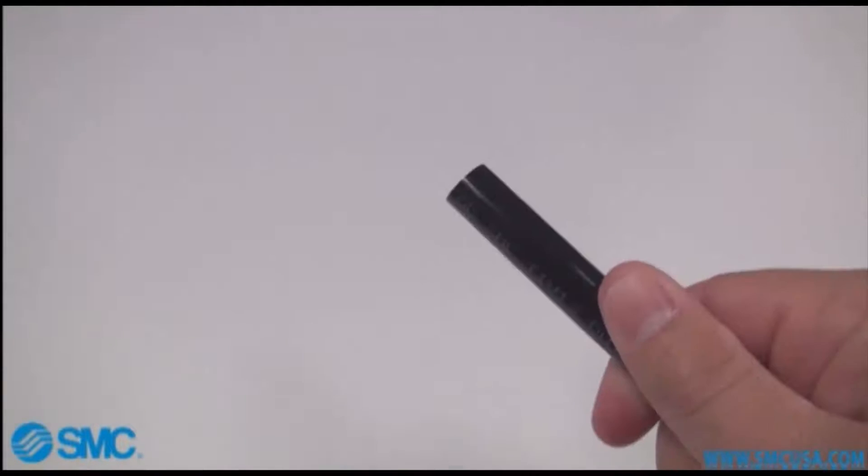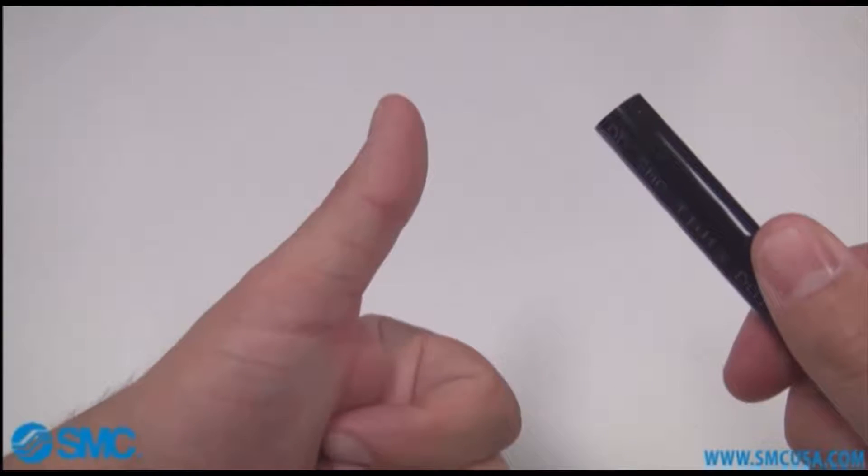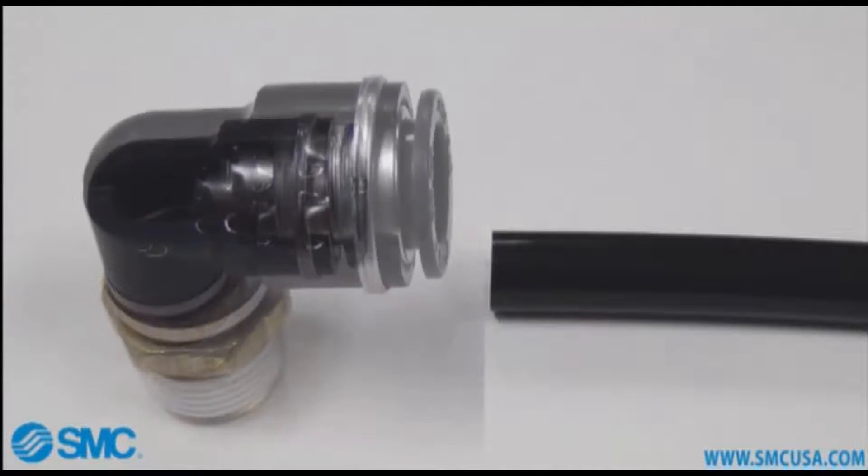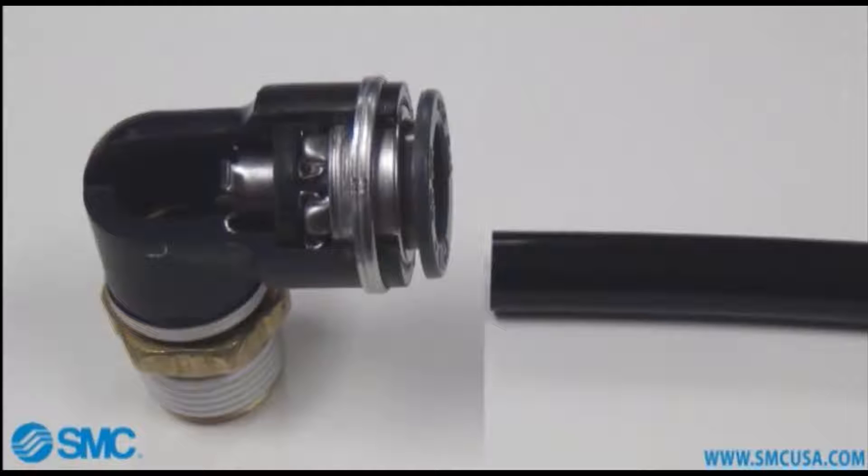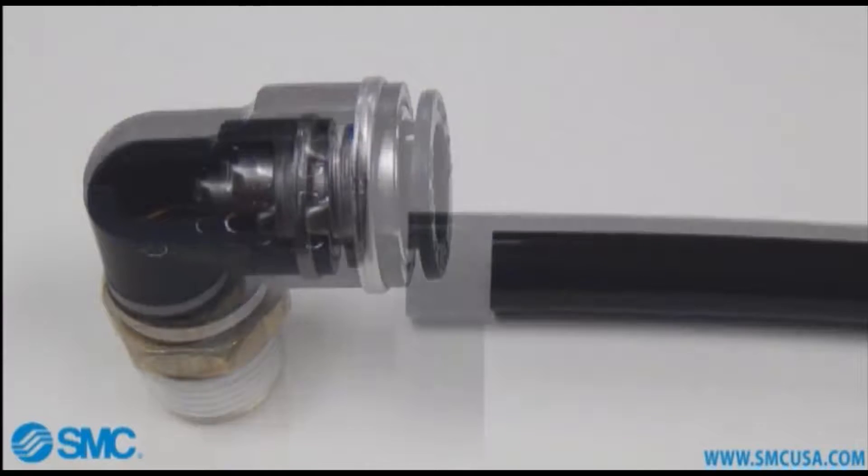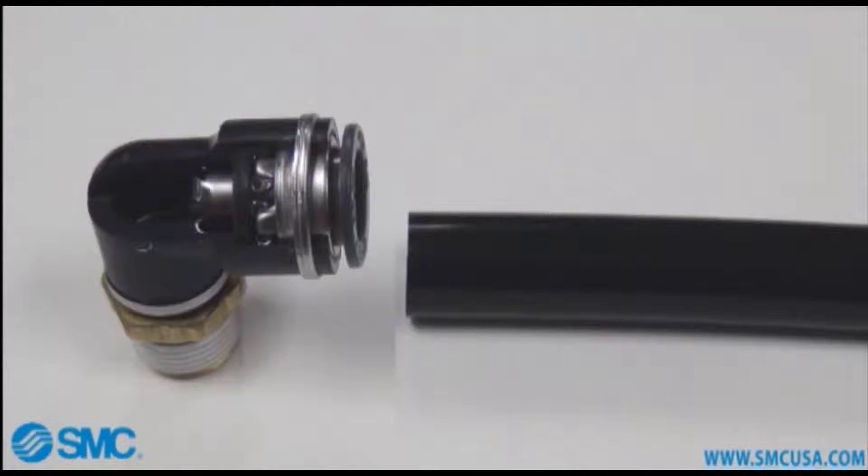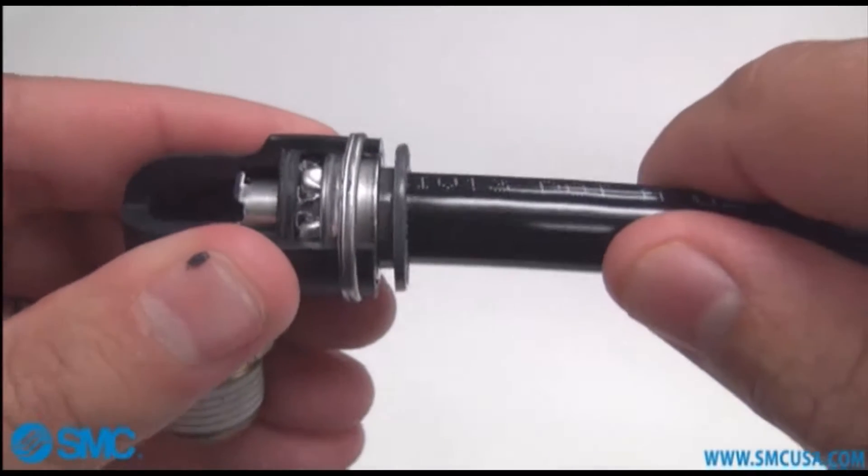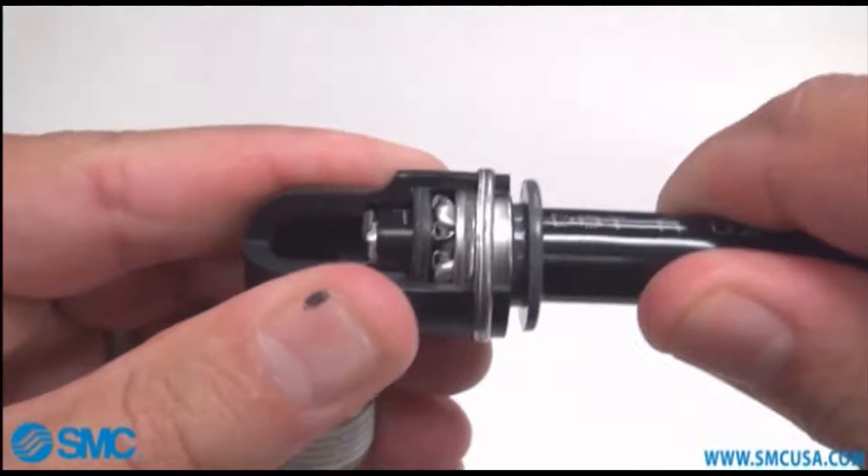Once you've inspected the tubing you can now insert it into the KV2 fitting. We have here a standard KV2 series fitting that has been sectioned for the video, along with a piece of TIV series tubing. The particular method that we will be discussing today is called the push push pull method.